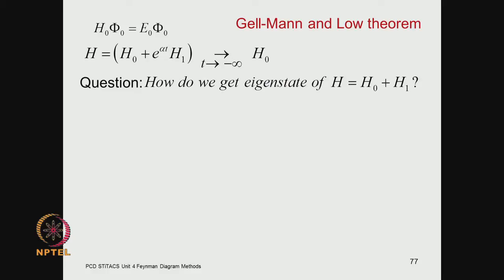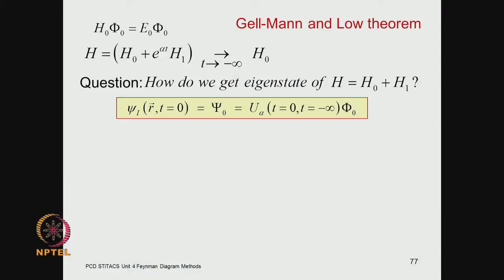As t goes to zero you have the full Hamiltonian, which is H0 plus H1 — that is the problem in which we are interested. We are trying to ask: if we know the eigenstates of the unperturbed Hamiltonian, how do we get the eigenstates of the full Hamiltonian inclusive of the complexity in it? We found that in the interaction picture the wave function at t equals zero can be obtained from the eigenstate of the unperturbed Hamiltonian phi-zero through the time evolution operator. We carry a subscript alpha on this because the time evolution will depend on how you are turning on the perturbation.